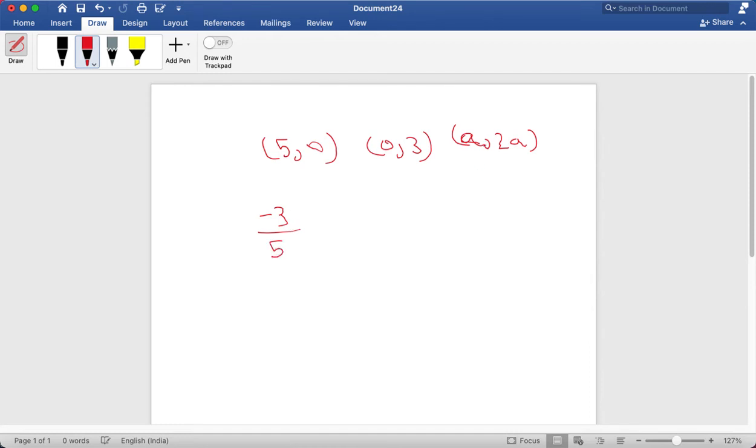Now if we equate this to this it will be equal to 2a minus 3. So we are doing y2 minus y1 divided by x2 minus x1 for these two terms now. So it will be 2a minus 3 divided by a minus 0 which is a. Now we have this equation so we just solve for a. So minus 3a is equal to 10a minus 15. So 13a is equal to 15 as the negatives cancel out. So a will be equal to 15 divided by 13.